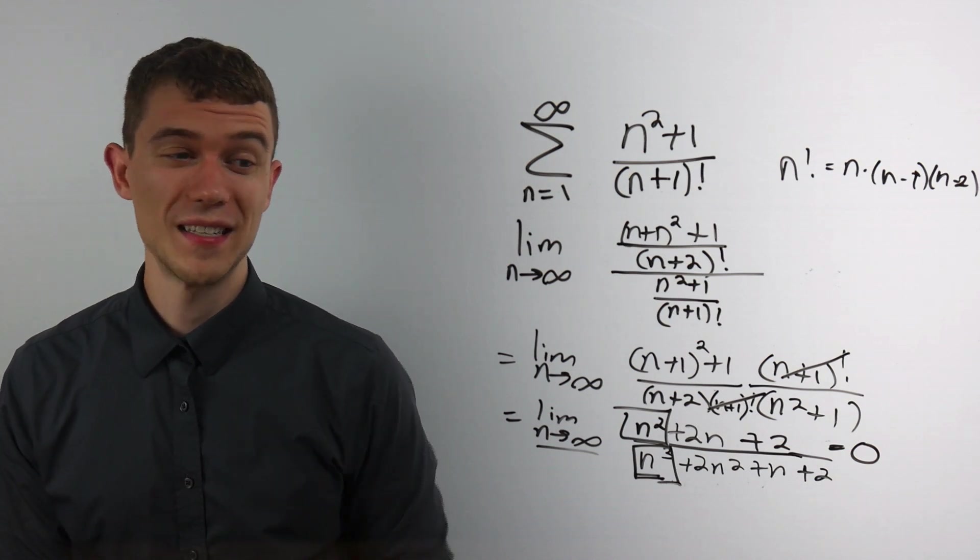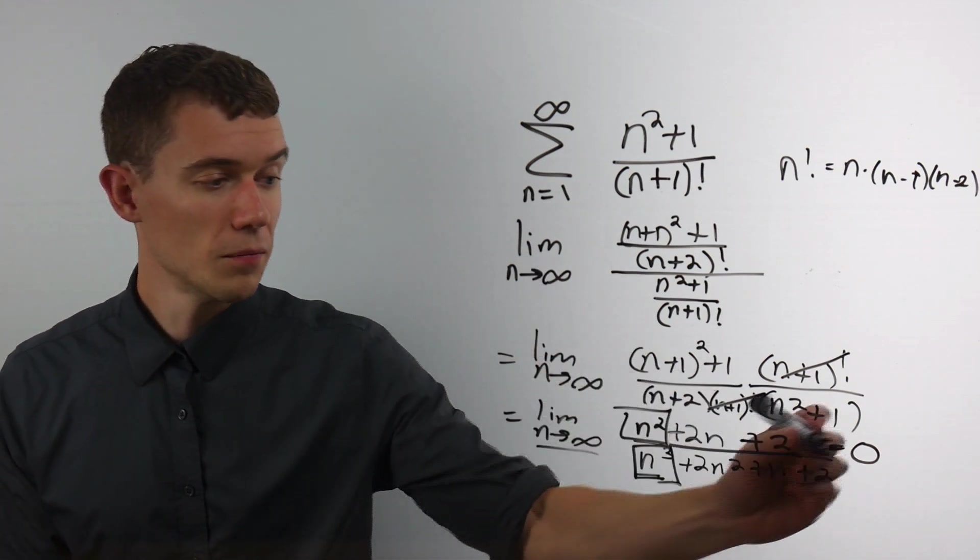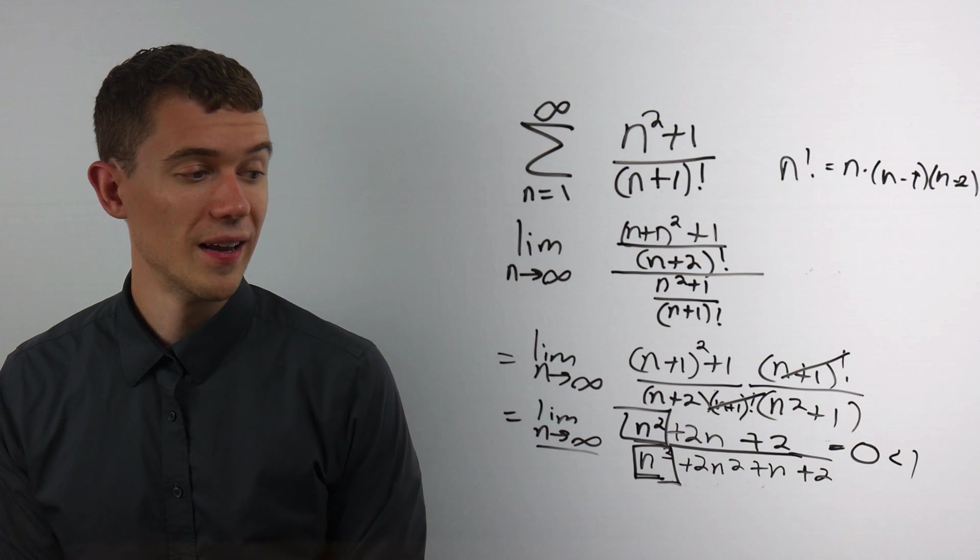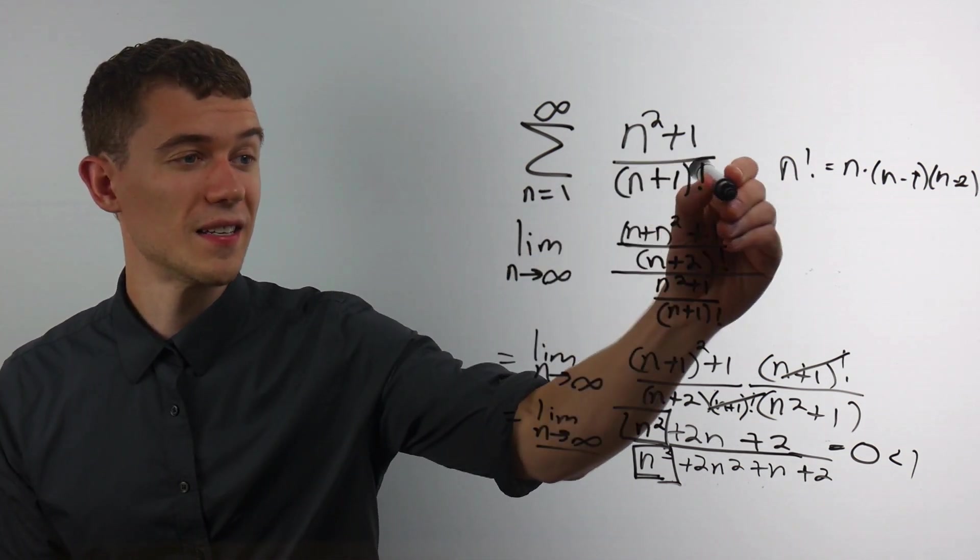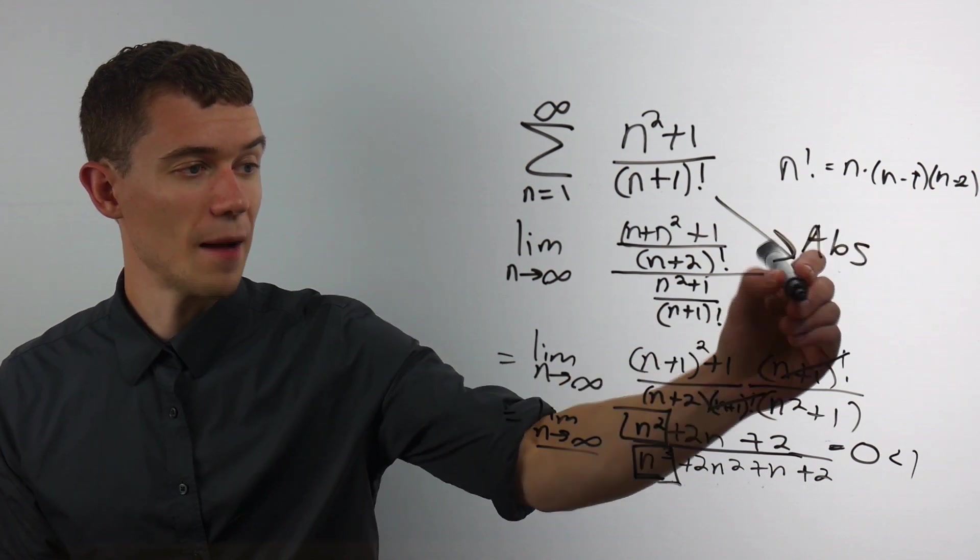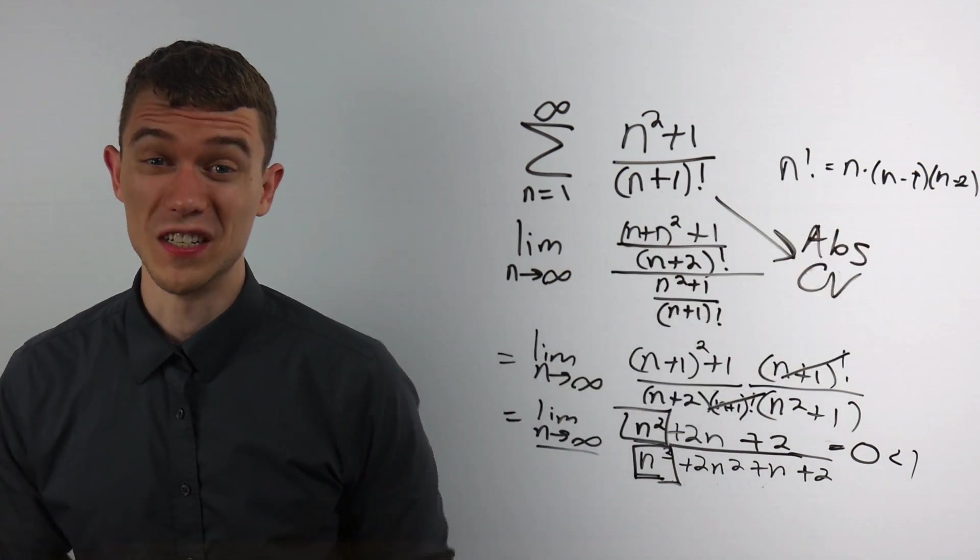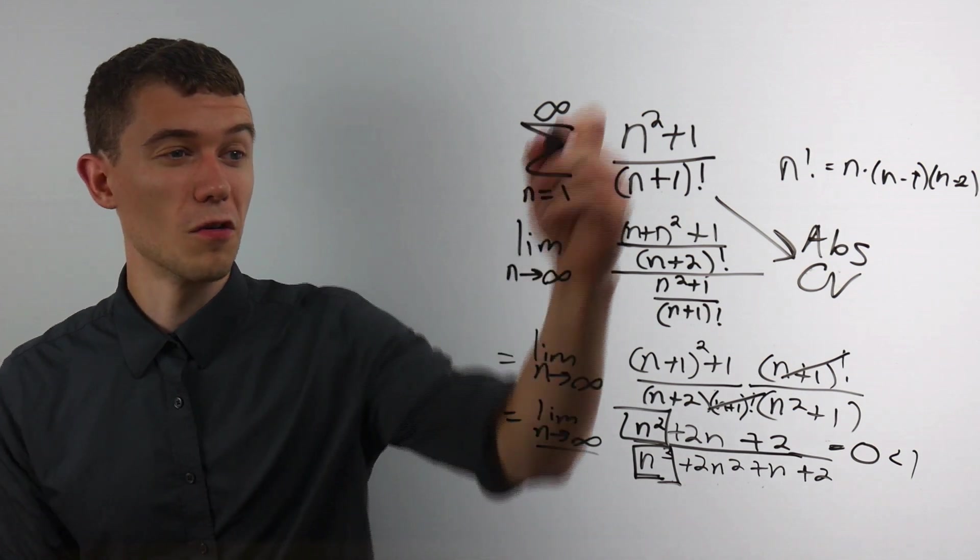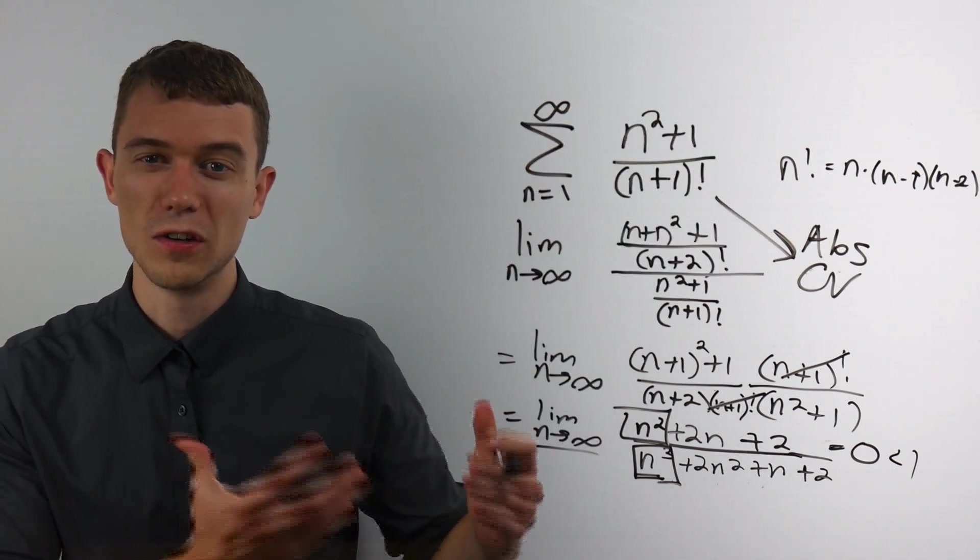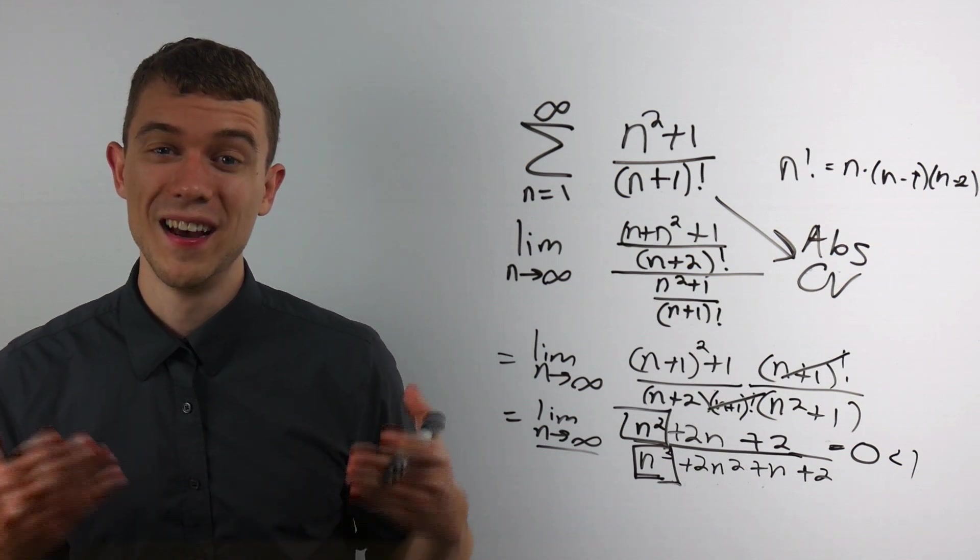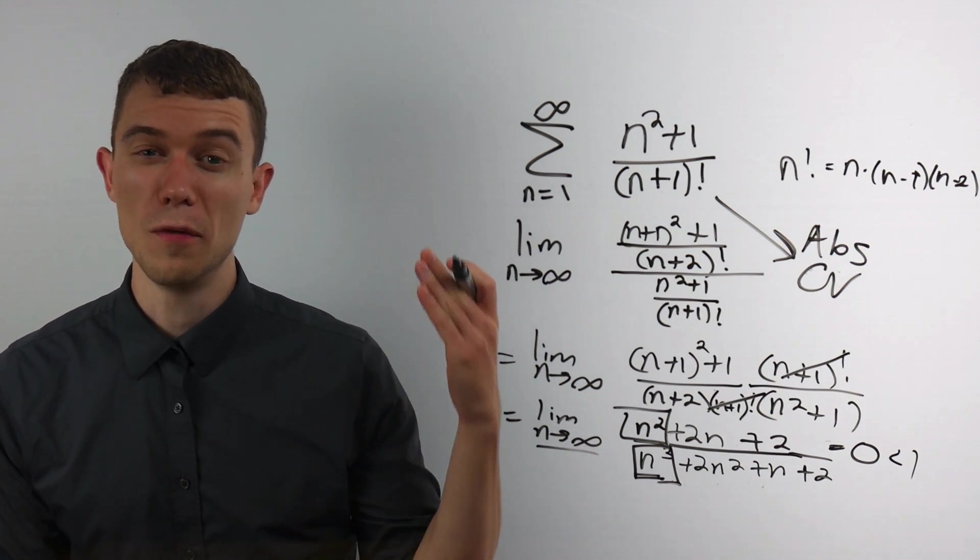And what does the ratio test say? Well, I compare this number I get to 1. And since it's less than 1, the ratio test says that our series in question is absolutely convergent. Not just convergent, but if I throw absolute values on it, it will still converge. It's absolutely convergent by the ratio test. I hope you got something out of this video, and I hope you have a great day.